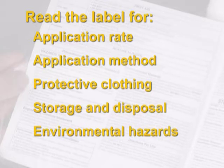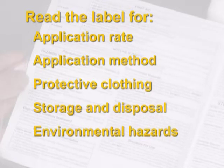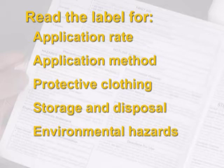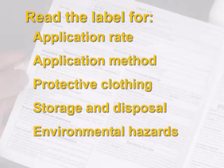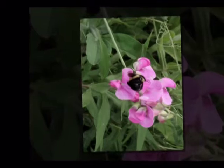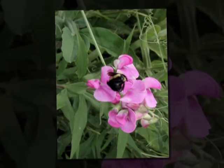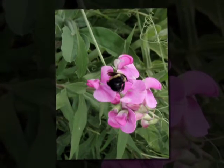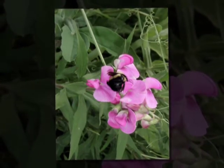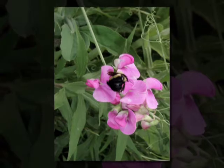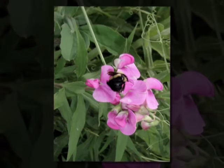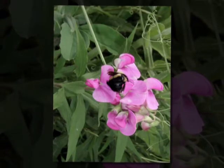Use the pesticide only on the sites listed on the label. You'll find the application rate, application method, protective clothing to wear, storage and disposal information, and any environmental hazards listed on the label. One environmental hazard listed might be toxicity to bees. Pesticide drift can poison bees when it reaches bee colonies or flowering plants where they are foraging for pollen or nectar.